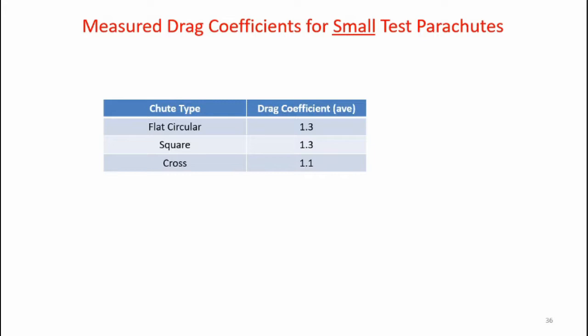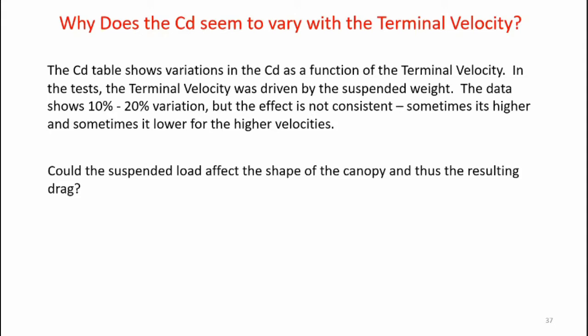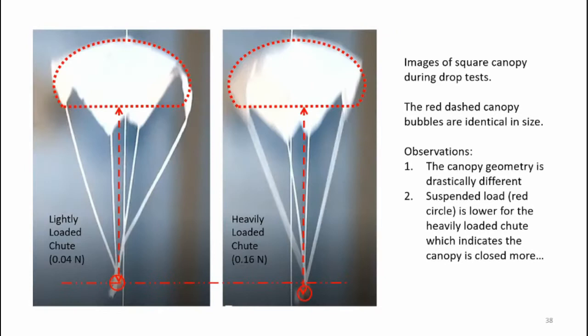These values are about double those of full-scale parachute systems. Why does CD seem to vary with terminal velocity? Three different suspended loads were used to give three different terminal velocities, and the data shows a 10 to 20 percent variation in calculated drag coefficients. Is it possible the suspended load could affect the shape of the canopy, and thus the drag and drag coefficient? Images of the square canopy under light and heavy loading show the shapes aren't drastically different, suggesting minimal effect on drag. Looking at the data plot, the CD is inconsistently up or down depending on terminal velocity, suggesting the effect could be air currents in the room or drag of the canopy moving along the guideline.